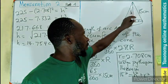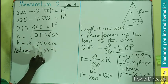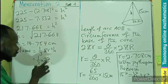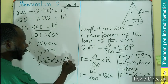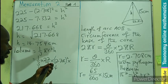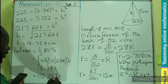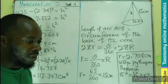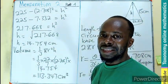Now we know the radius and the height, so our volume is going to be 1/3 π r² h. Using 22 over 7 as the value of π, our radius is 2.708 all squared, times 14.754. When we compute that, this gives us 113.347 cm³. So the volume of the cone formed from the sector of radius 15 centimeters will be 113.347 cubic centimeters.